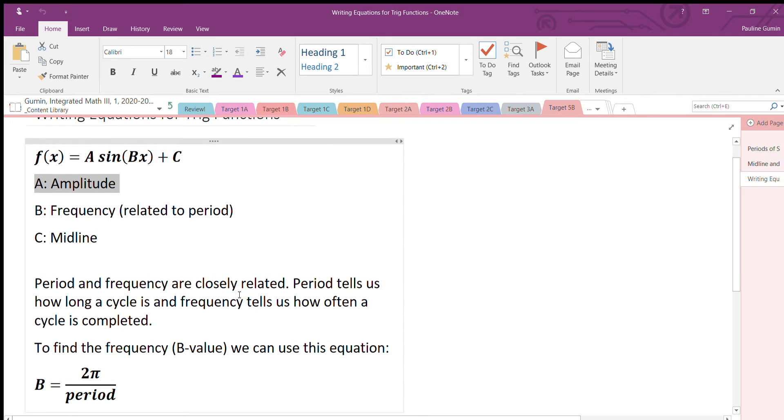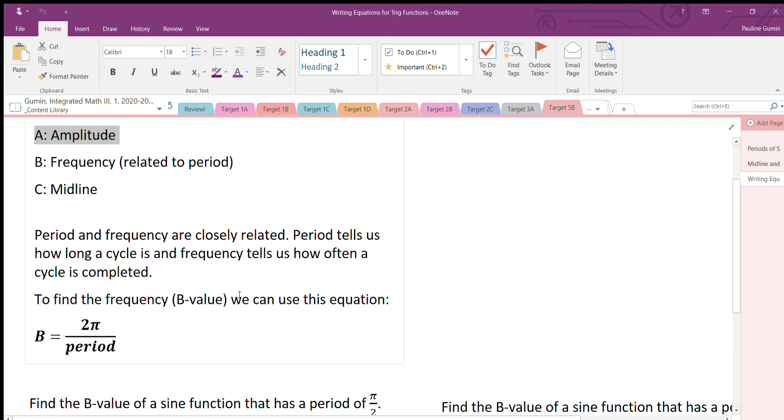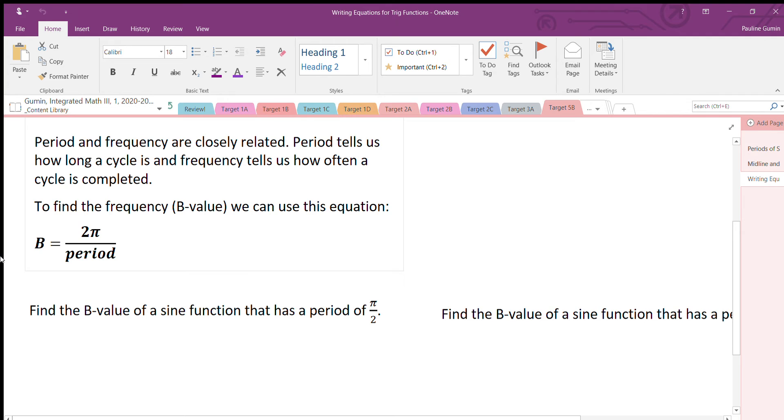So the period and frequency are very closely related. The period tells us how long a cycle is. The frequency shows us how often a cycle is completed, so very similar to what we define as frequency in English. To find that B value for the equation, we use 2π divided by the period.